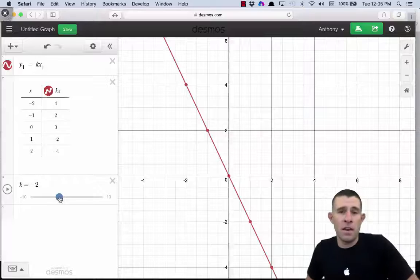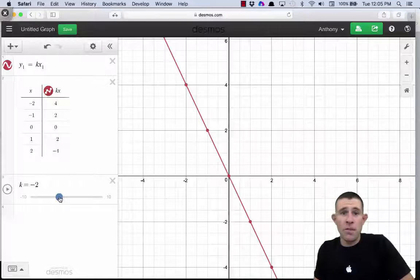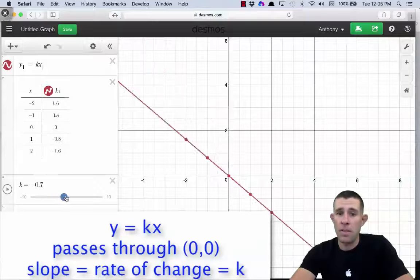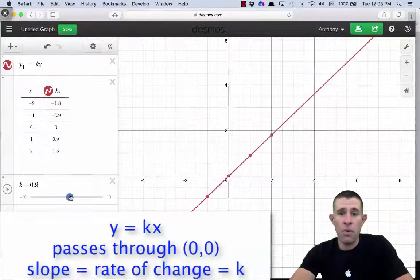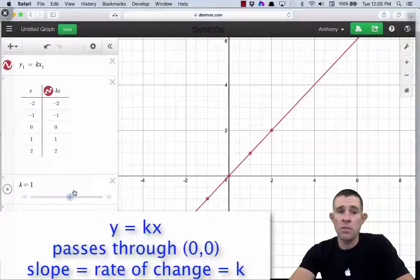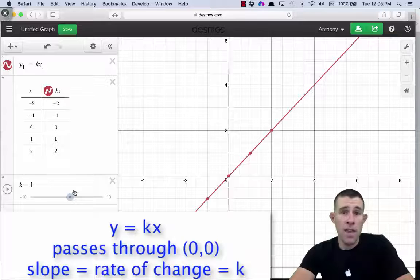So this is our equation, and from this, you should notice a few different things. This graph is always going to pass through the origin, and the slope of this graph, or the rate of change of this graph, is always going to be equal to the value of k, the constant of variation.